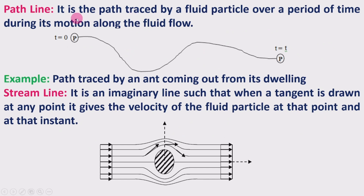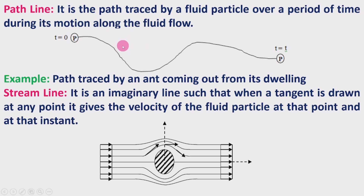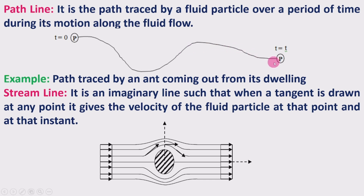First one is the path line. It is a path traced by a fluid particle over a period of time during its motion along the fluid flow. The fluid flow consists of a number of particles. If you take one particle in the fluid flow, then the path that fluid particle moves through is called a path line — the path traced from initial time zero to a particular time t.